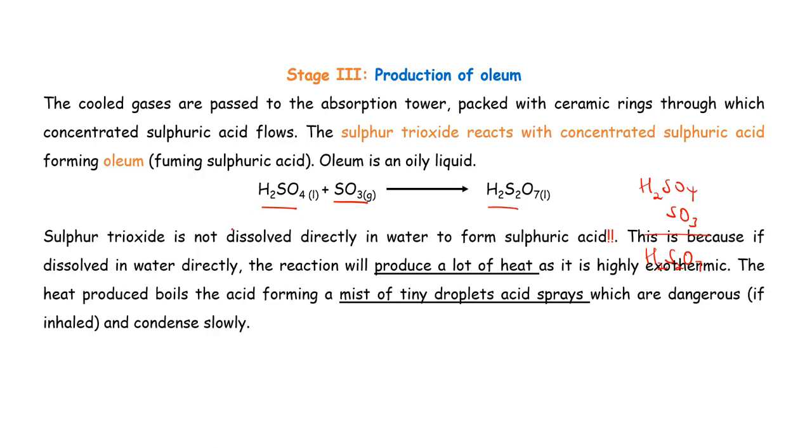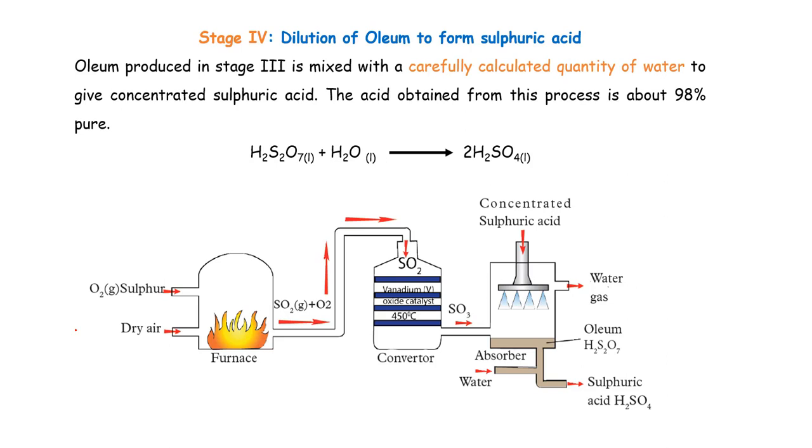So, sulfur trioxide is not directly dissolved in water to form sulfuric acid because if dissolved in water directly, the reaction will produce a lot of heat, which is highly exothermic. The heat produced boils the acid forming mist of tiny droplets of acid sprays, which are dangerous. Obviously, if you inhale such, it's not quite good because obviously something acidic into the lungs could be lethal. So, that's stage 3, production of oleum.